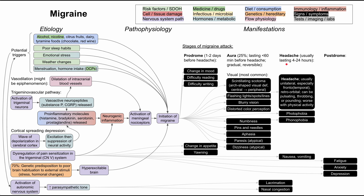Next, the migraine headache itself — this is the primary and main symptom. The headache usually lasts 4 to 24 hours. It's typically unilateral, especially in the frontal or frontotemporal lobe, or retroorbital regions. It can be described as pulsating, throbbing, or pounding, and is typically worse with physical activity. It's also associated with photophobia and phonophobia — patients usually shut themselves in a dark, quiet room. Nausea and vomiting, as well as lacrimation and nasal congestion, may also be present.